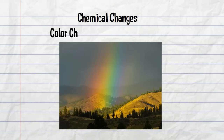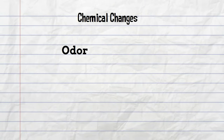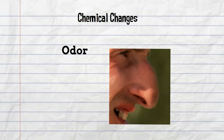A change in color is a chemical change. A change in odor can be a clue that a chemical change has occurred.